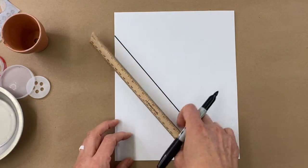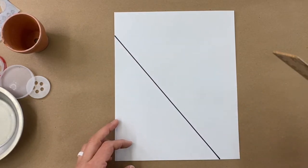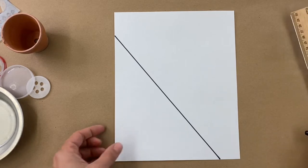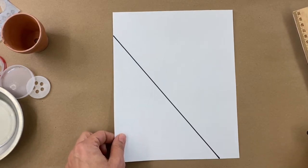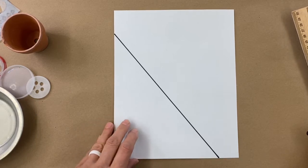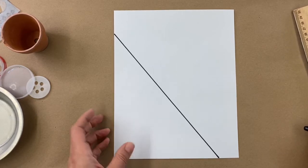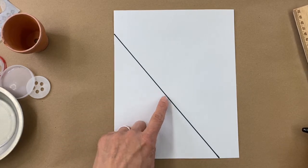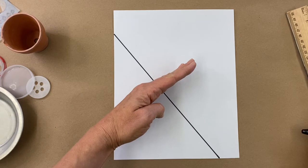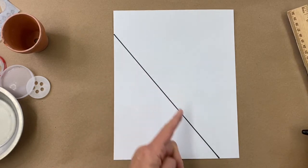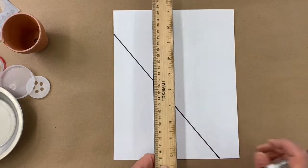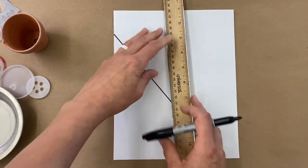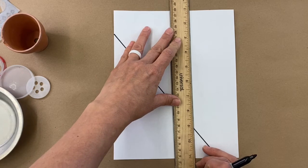The next step is to do another line that goes from one edge of the paper to another edge of the paper. There's one thing I'd like you to do differently though. This time I want you to make sure that the line intersects or crosses over this first line at some point. Again, I could do a vertical, a horizontal, or a diagonal. That's completely up to you.